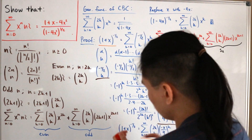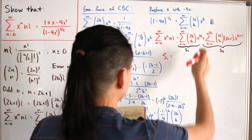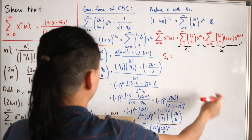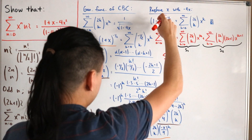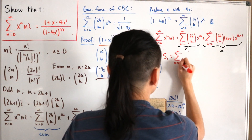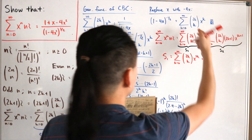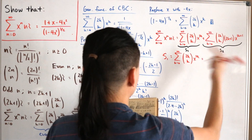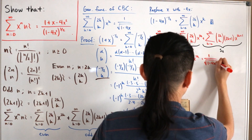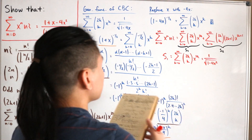For S1: Σ_{k=0}^∞ C(2k,k) · x^(2k). Using the CBC generating function, we simply replace x with x², giving S1 = 1 / √(1 - 4x²).